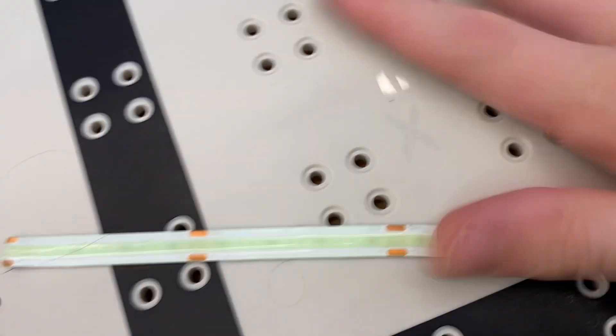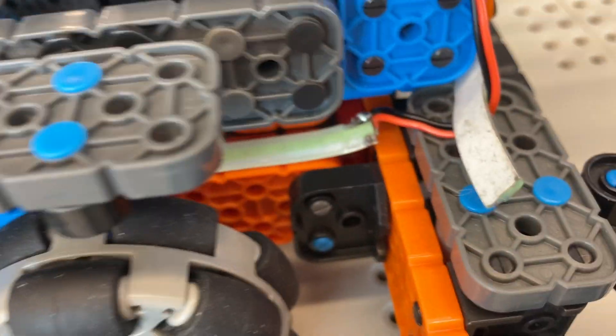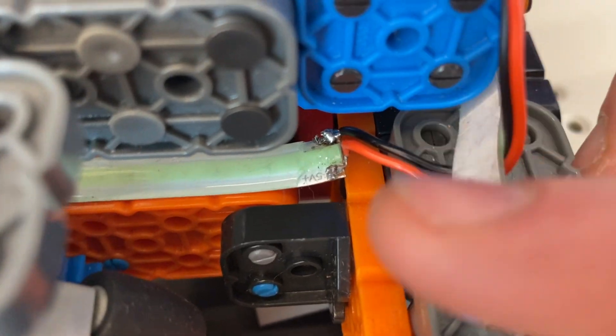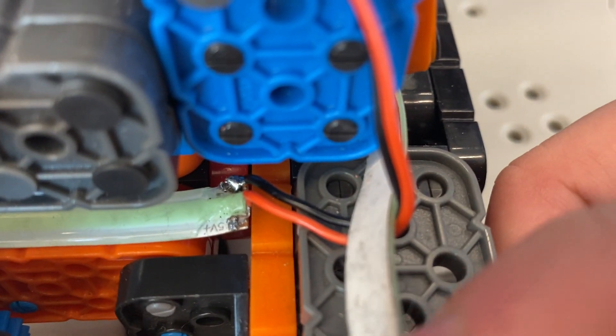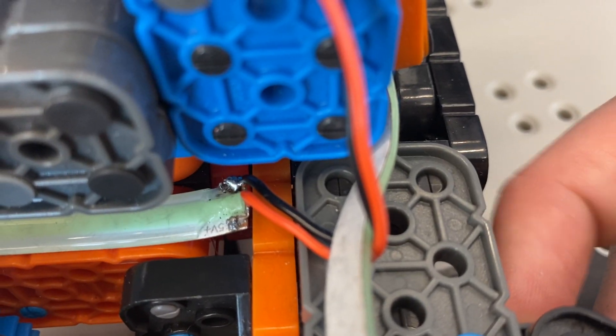What you do now is you solder it on. See how I soldered it on here? I soldered my black to my negative and my red to my positive right there. You can ask your coach to solder it on for you. I did this myself because it's cool.